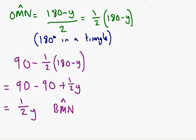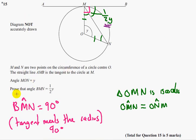So I think we've proved it. And that's it for question 15. It says prove the angle BMN equals half Y, and we've done that. So let's have a look at the mark scheme to see how we get our five marks for question 15.